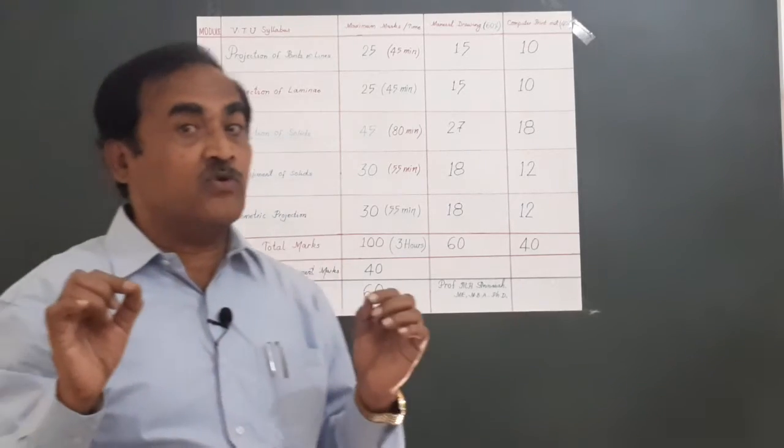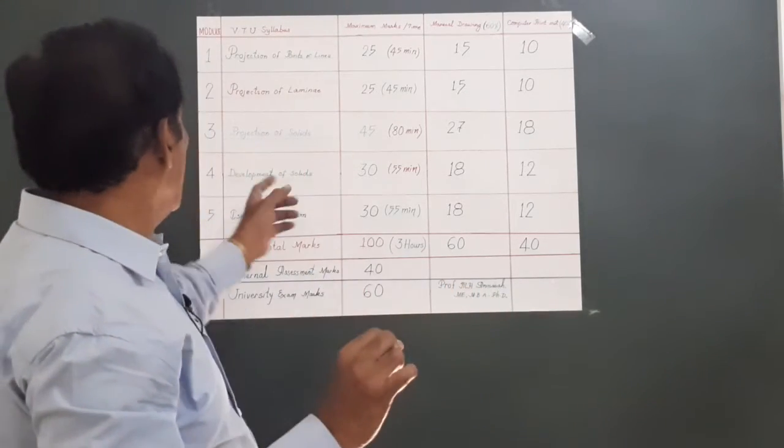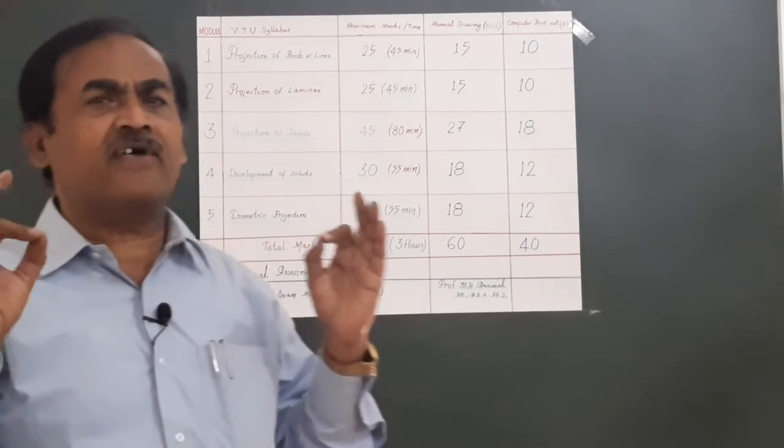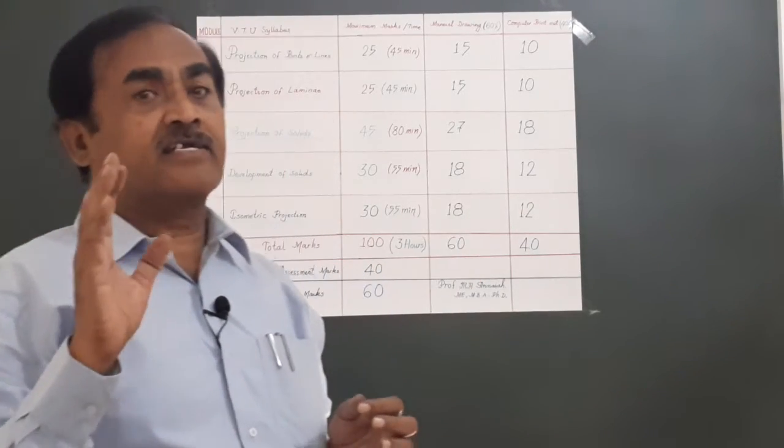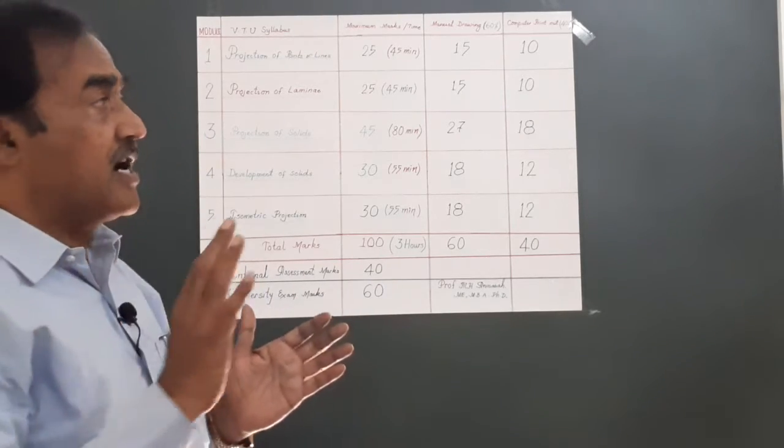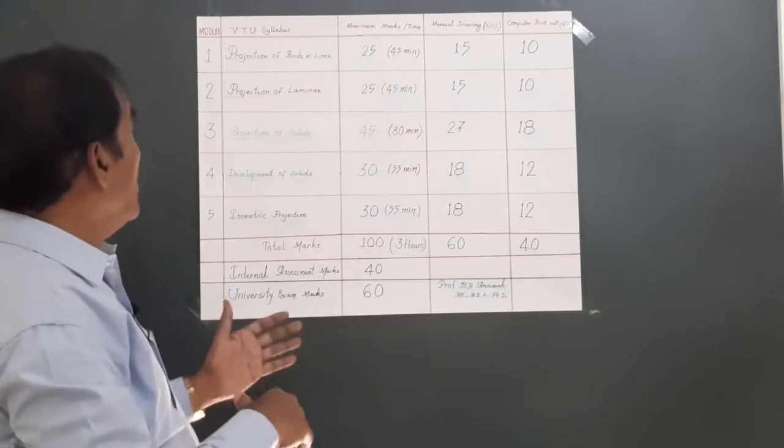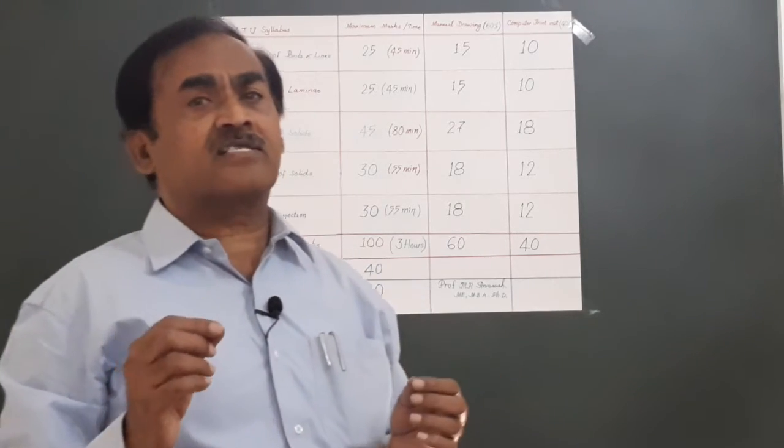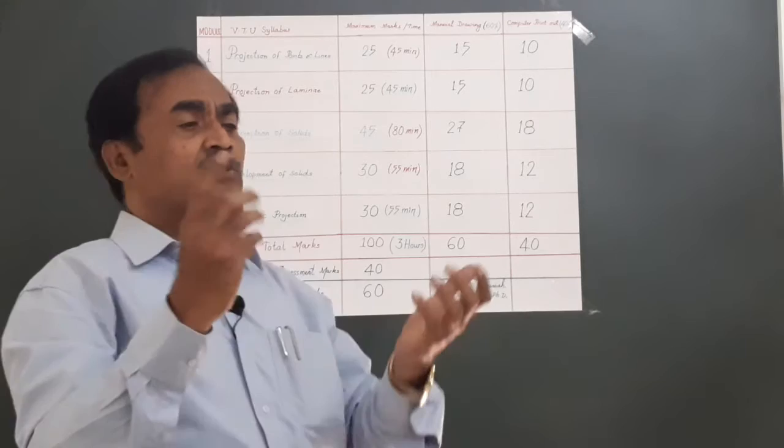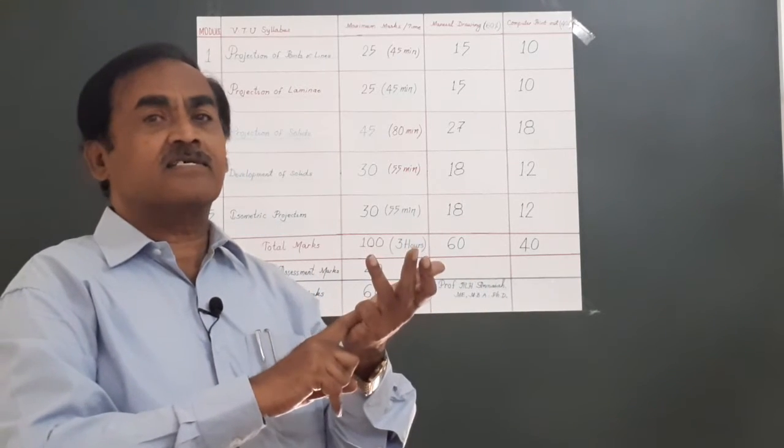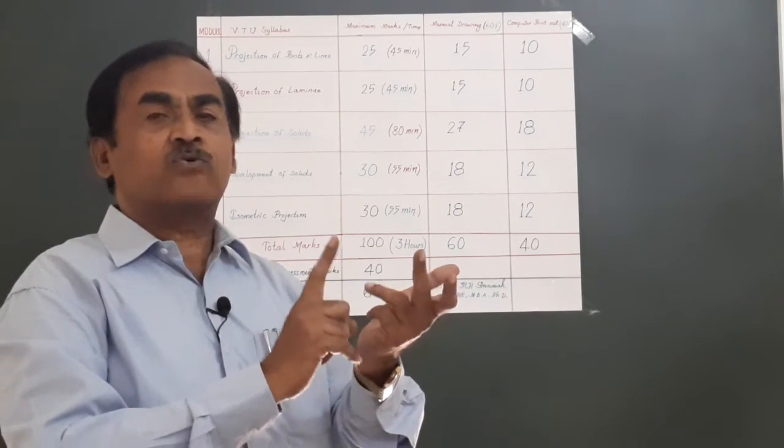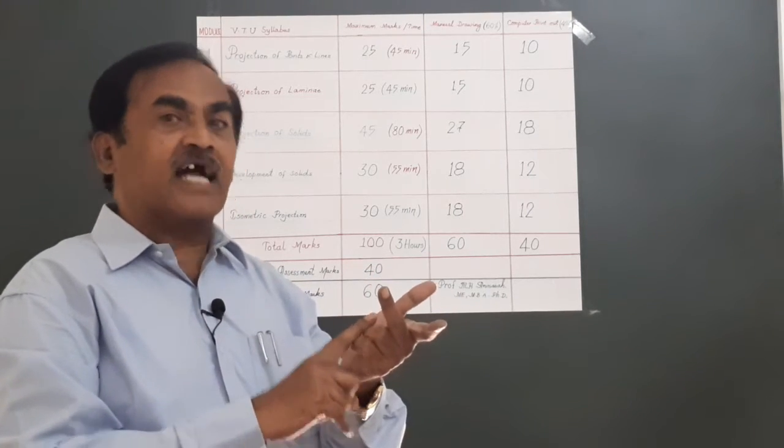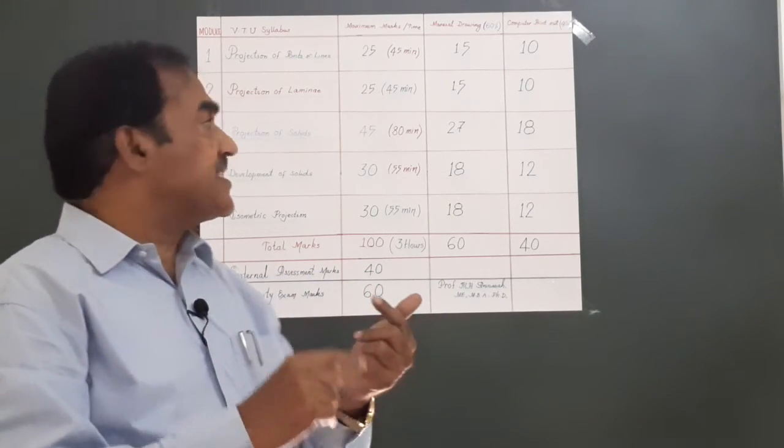Again, I am repeating: question number 2, that is module number 3, the projection of solids, is very very important. It carries 45 marks and there are three steps involved. If you just total this in the whole examination, you will have to answer just three questions: one from planes or lines, second question is the compulsory question on projection of solids, and the third part is either isometric projection or development of solids.